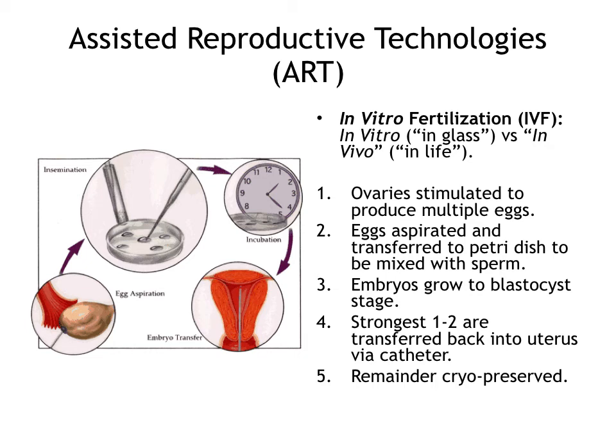In vitro fertilization can be expensive, ranging on average between $10,000 to $25,000 per cycle, depending on the underlying cause of infertility. Cycles which utilize gamete donors, sperm injection, or genetics testing can be more expensive, jumping to about $25,000 per cycle. On average, a woman will need about three IVF cycles to get pregnant.